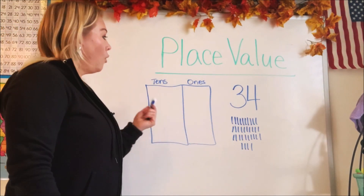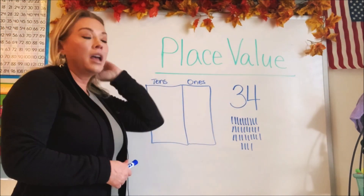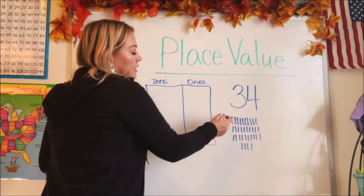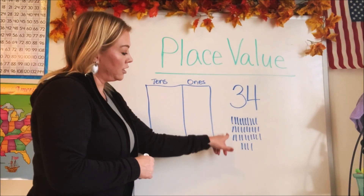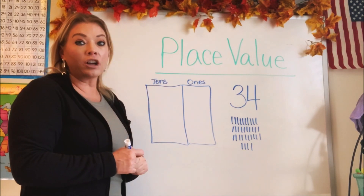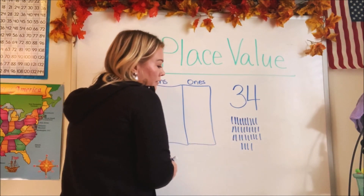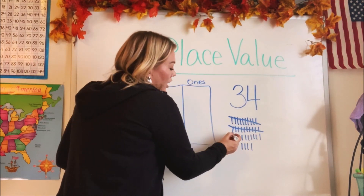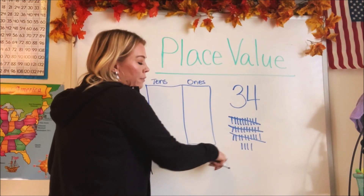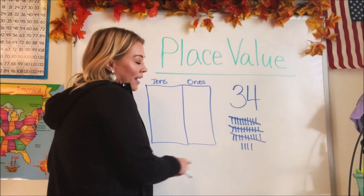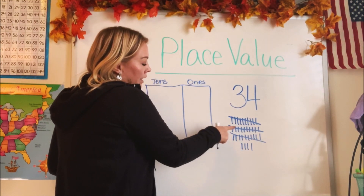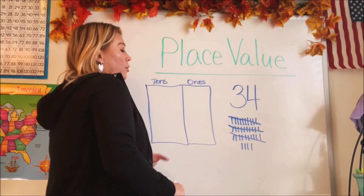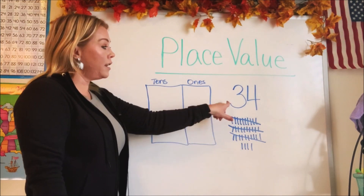All right, so we need to know which number goes in which column. We could look at it and say, okay, it's 34 — let's mark out 34 dashes and see how many groups of tens are in it. I did it in rows of 10. So here's one group of 10. Here's another group of 10. Here's the third group of 10. And then how many little baby ones are left over? Four: one, two, three, four. 10, 20, 30, 31, 32, 33, 34.